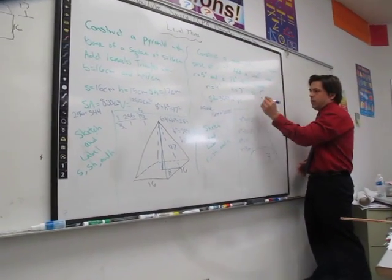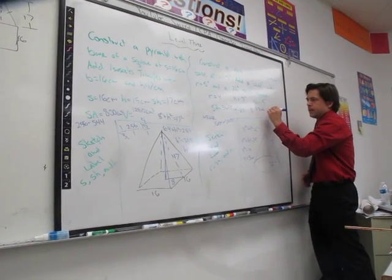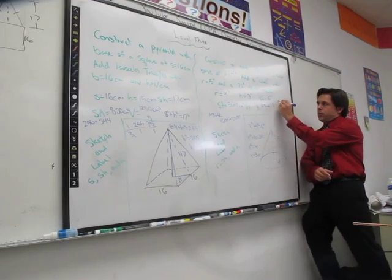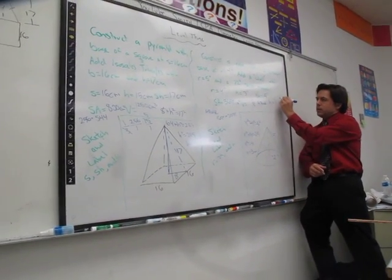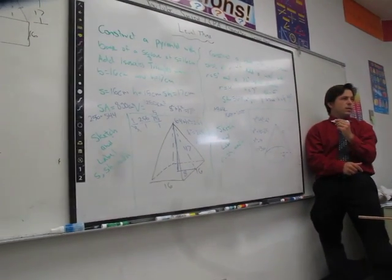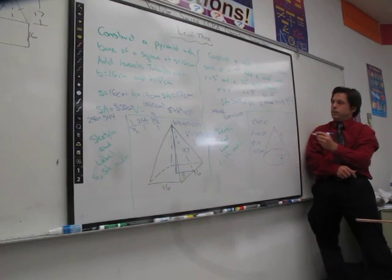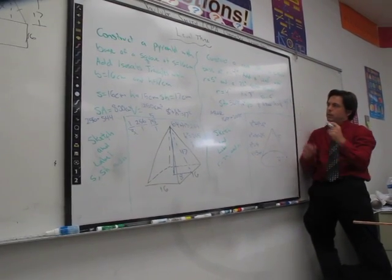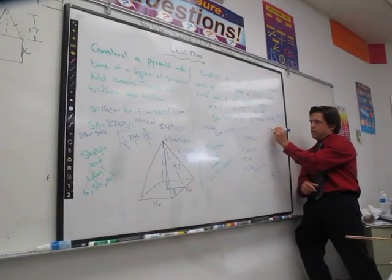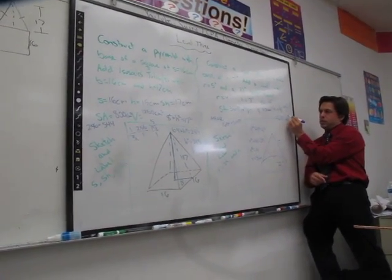And the volume will be 1 third area of the base times the height. So that equals 1 over 3 times 16 pi over 1 times what was the height? 3. Do you see anything we can cancel? Yeah. The 3's. We're just left with 16 pi. 16 pi inches cubed.